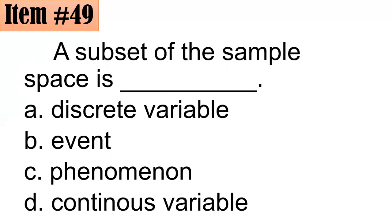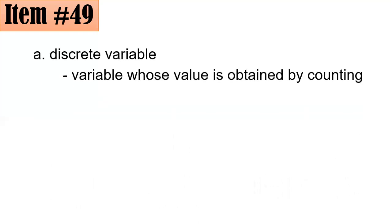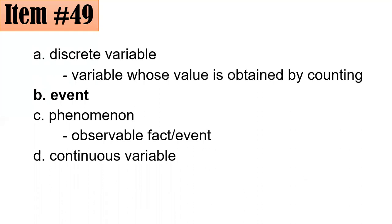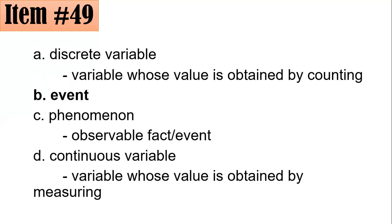Item 49: A subset of the sample space is — is it a discrete variable, event, phenomenon, or continuous variable? The correct answer is event. A discrete variable is obtained by counting, a phenomenon is an observable fact, and a continuous variable is obtained by measuring. Letter B.